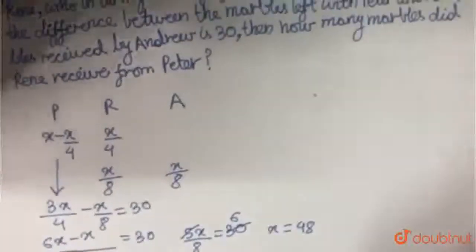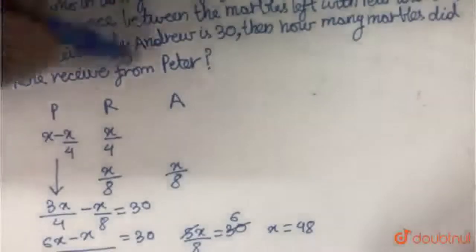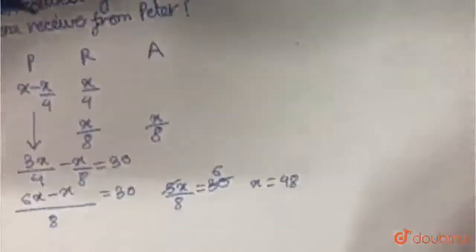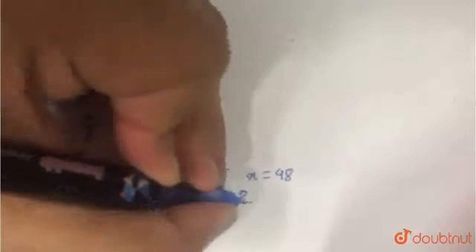But 48 is not our answer. Remember, they are asking how many marbles did Ren receive from Peter? So X by 4 will be our answer. So 48 upon 4 will be our answer, which is equal to 12 marbles.